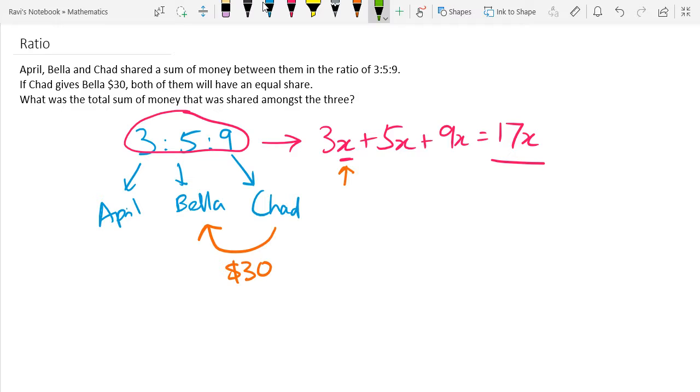So we say that Chad gives Bella $30. So from Chad, who has 9x parts of money, you subtract 30. That is equivalent to whatever Bella has, which is 5x plus 30. So how do we get this? Because we know that Chad, who has 9x parts of money, is going to give away $30.